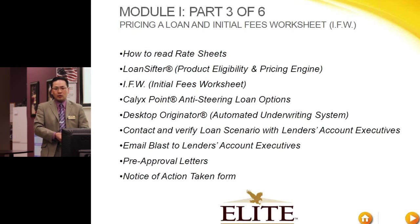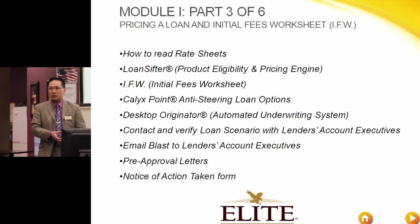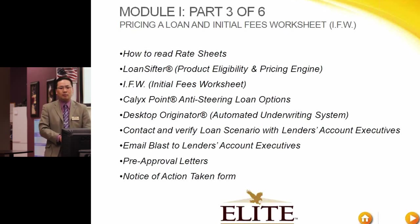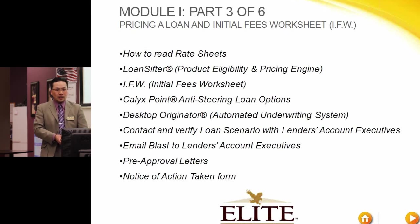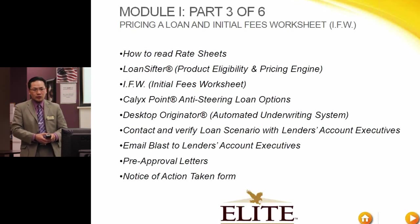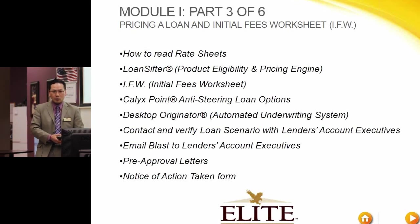The pre-approval letter will tell you how to get access to your own pre-approval letter, where you can issue it once you know how to run desktop originator. But until then, you can't get access to the pre-approval letter. If the loan does not get approved through the automated underwriting system, you have to give them a notice of action - whether it's declined, withdrawn, or they cancel the file. We're going to spend most of our time in CalyxPoint and very briefly on the desktop originating software.